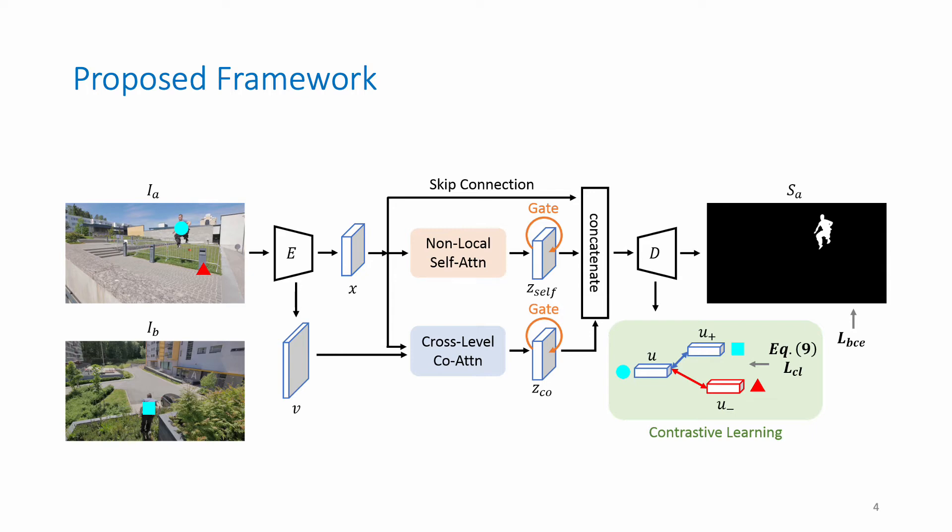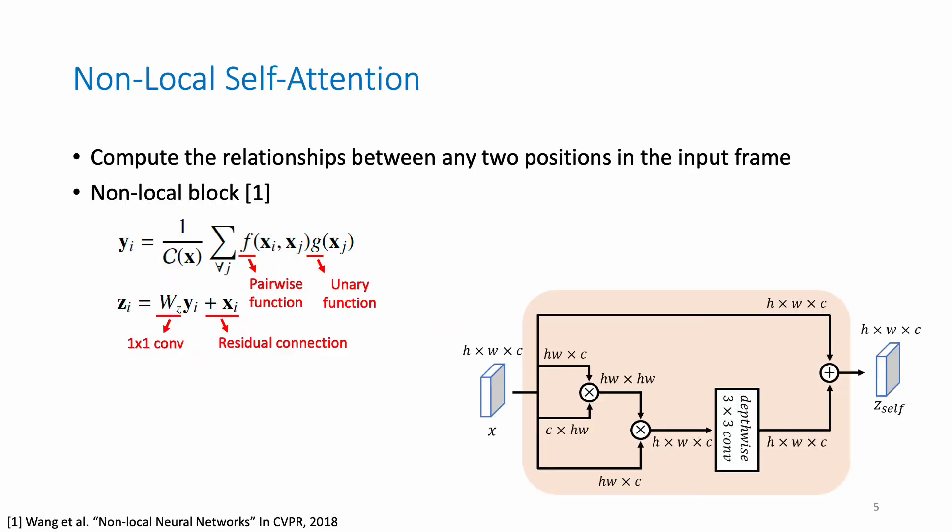Then I will talk about the details of each module. For the non-local self-attention, we compute the relationships between any two positions in the input frame. The non-local operation contains a pairwise function and a unary function. The output is then wrapped into a non-local block with a residual connection.